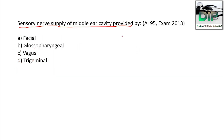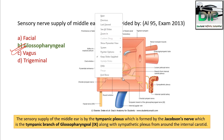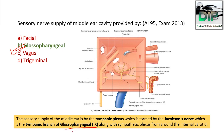Sensory nerve supply of the middle ear cavity is provided by — facial, glossopharyngeal, vagus, or trigeminal? The correct answer is glossopharyngeal. It forms the tympanic plexus via Jacobson's nerve, which is the tympanic branch of the glossopharyngeal, along with the sympathetic plexus around the internal carotid artery.